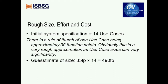We did a rough size, effort, and cost estimate — a very rough rule of thumb, but better than nothing. In the initial system specification we had 14 use cases. There is a general rule of thumb that one use case is approximately 35 function points. Obviously this is very rough because a use case can vary in size quite significantly, but when you haven't got any information at all it's not a bad indicator. So we multiplied the 14 use cases by 35 function points and got a system of about 500 function points, which is a sizeable system.